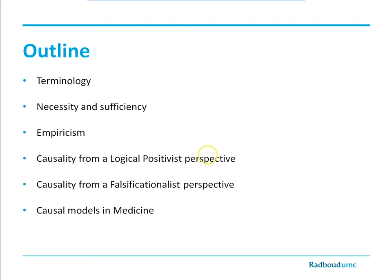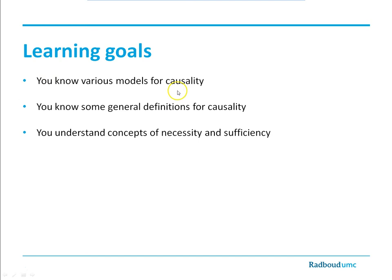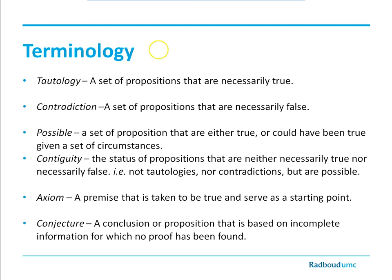Before we talk about models of causality, we need to cover some terminology, items such as necessity and sufficiency. After that, we'll cover a little bit of philosophy of science and how we as humans can obtain knowledge, if at all. And finally, we will cover some causal models often used in medicine. The learning goals are to understand necessity and sufficiency in causal reasoning, to come away with general definitions for causality, and to know some general models of causality specific to medicine.